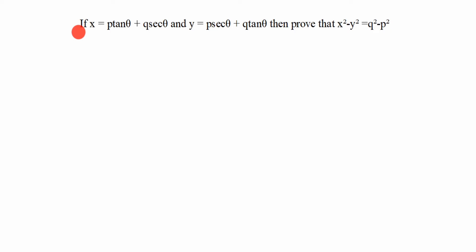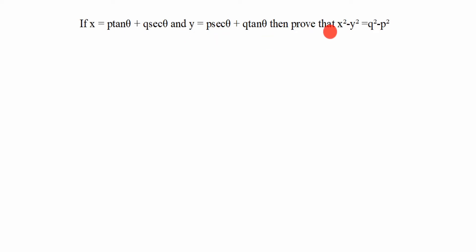You see this question: if x is equal to p·tan θ plus q·sec θ, and y is equal to p·sec θ plus q·tan θ, then prove that x² minus y² is equal to q² minus p².